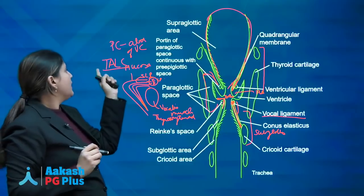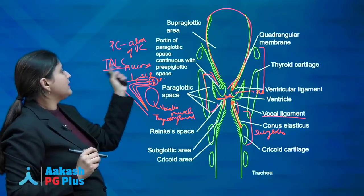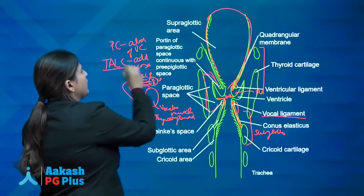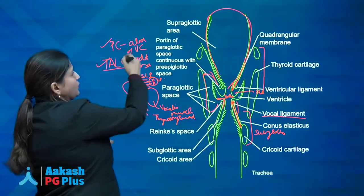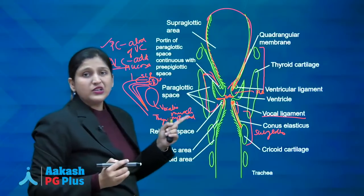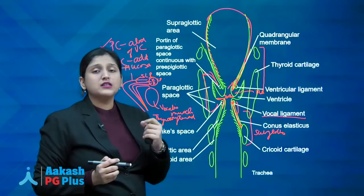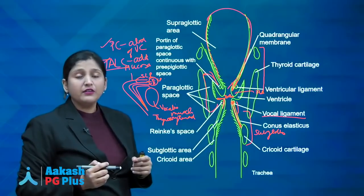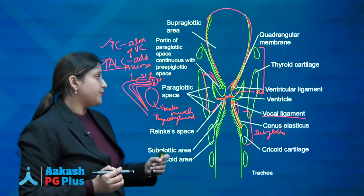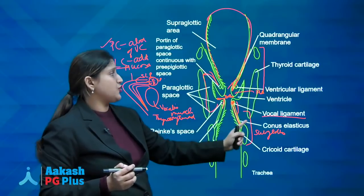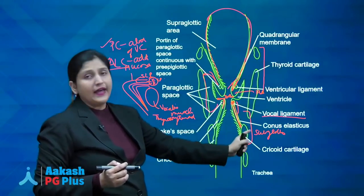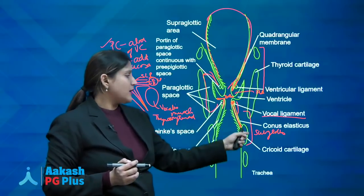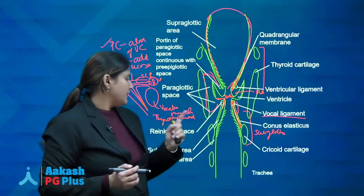Remember it by the mnemonic TALC: thyroarytenoid and lateral cricoarytenoid are the adductors of the vocal cord. The recurrent laryngeal nerve supplies all intrinsic laryngeal muscles except the cricothyroid. The external branch of the superior laryngeal nerve supplies the cricothyroid muscle. The larynx is subdivided into supraglottis, glottis, and subglottis. Glottis is the narrowest part in adults; subglottis is the narrowest part in pediatric patients.